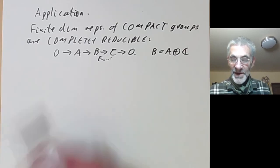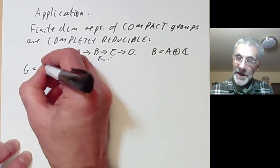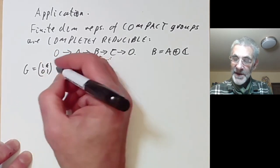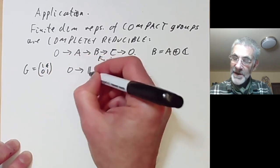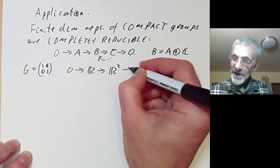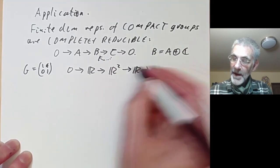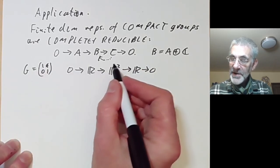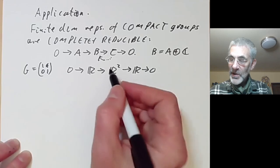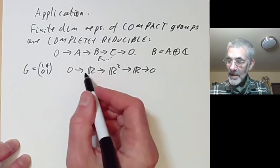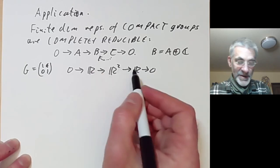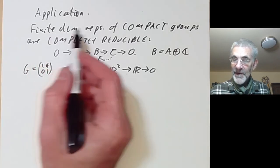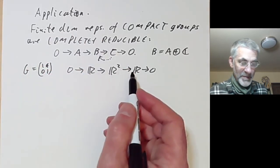As an example of a representation that doesn't split, we can take g to be isomorphic to the reals and identify it with these matrices acting on R². We have this sequence of representations of g, and g acts trivially on R and R because that just corresponds to the fact there's a 1 there, but it acts non-trivially on R². So you can't write R² as a sum of two sub-representations each of which is trivial. For non-compact groups you can't always write finite dimensional representations as a sum of irreducible ones.